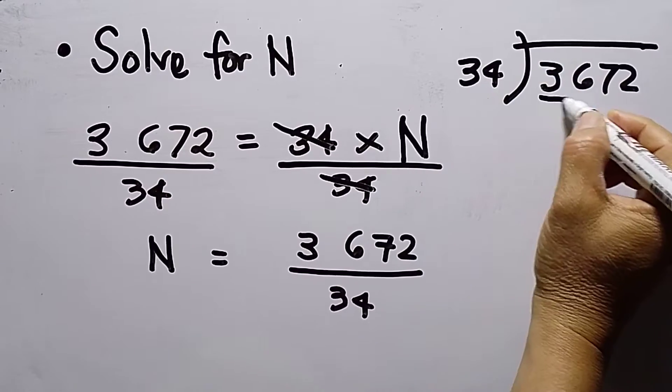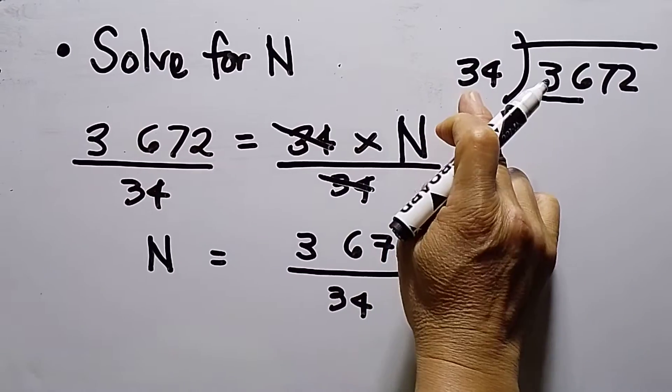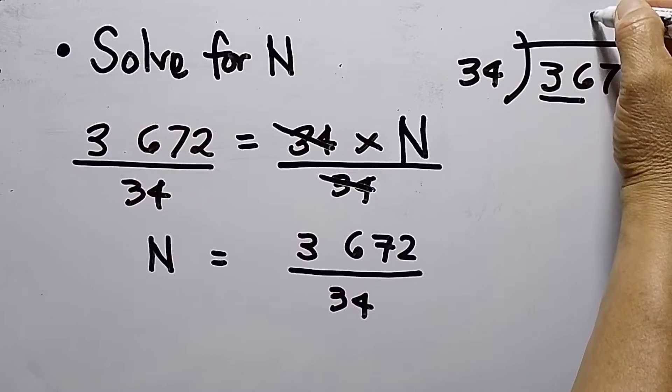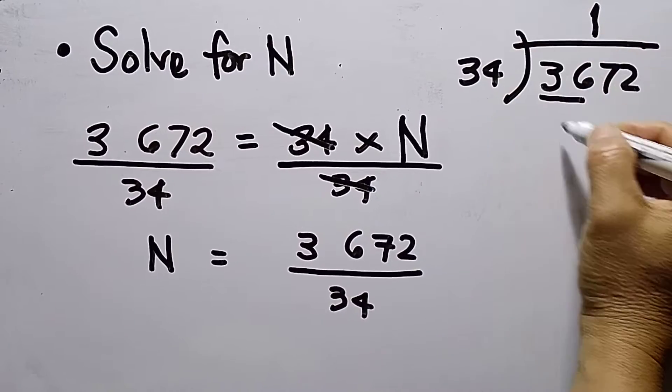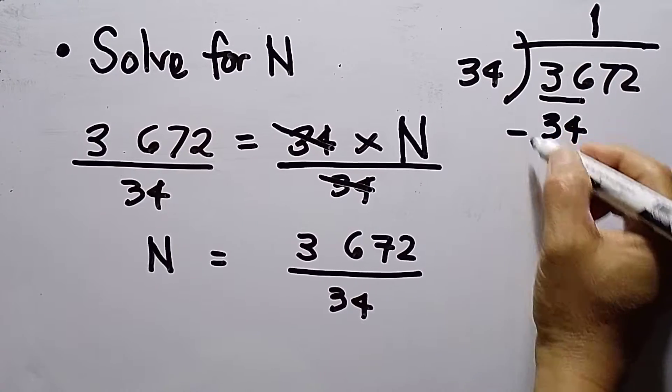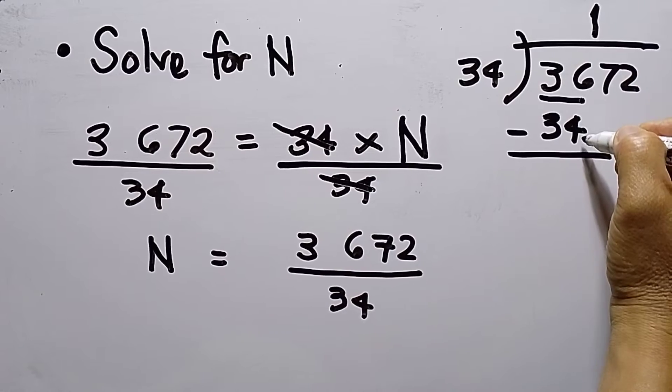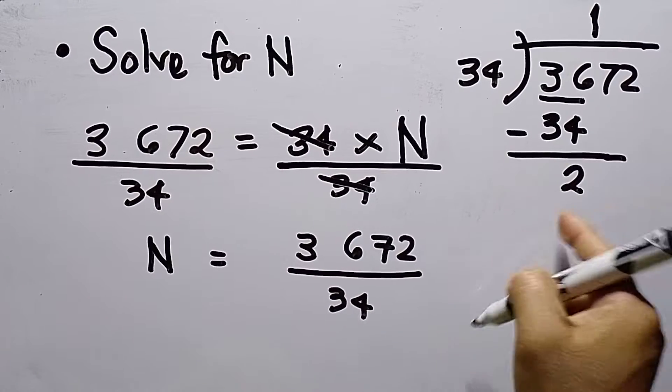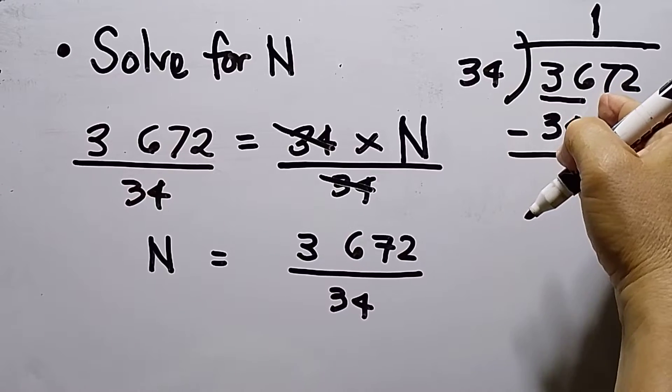Now I can use this one, 36. How many 34s are in 36? It's only 1. And then multiply, this is 34. 6 take away 4, that is 2. Since 2 cannot be divided by 34, I need to bring down the next digit, that is 7.